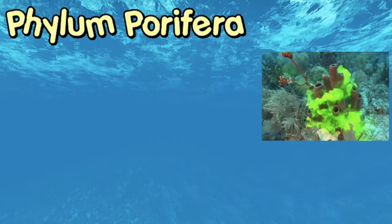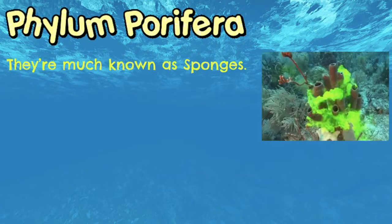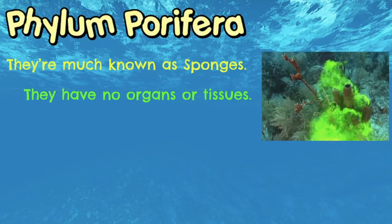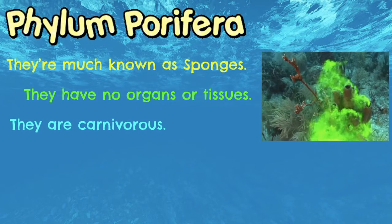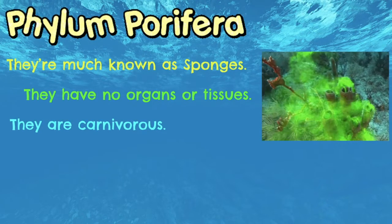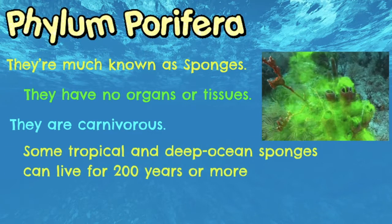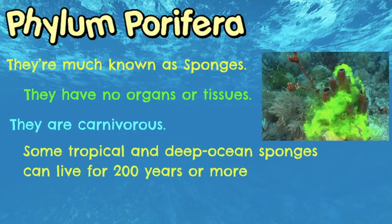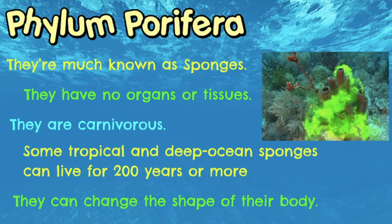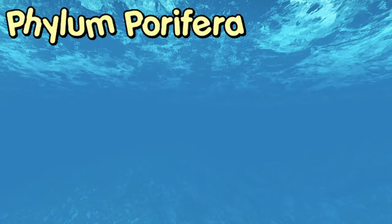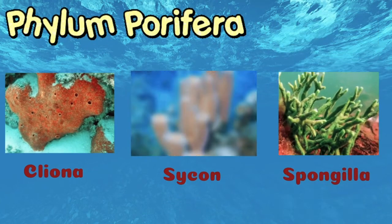Let's first learn about phylum Porifera, much known as the sponges. Sponges have no organs or tissues on their bodies. All Porifera are carnivorous — their favorite food is mostly crustaceans or crabs. Some tropical and deep-ocean sponges can live for 200 years or more. Sponges can change the shape of their bodies. Some examples of Porifera are Sycon, Cliona, and Spongilla.